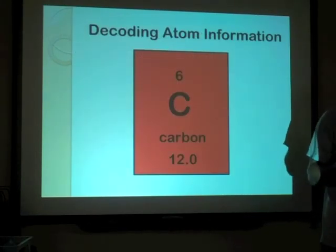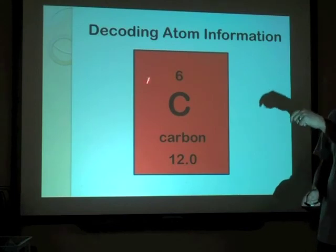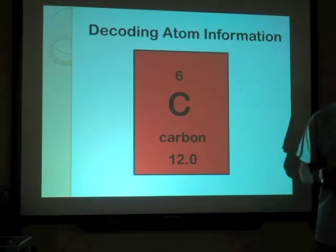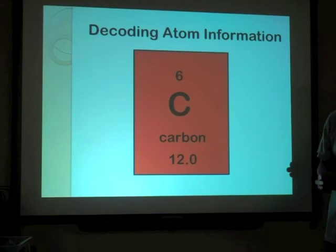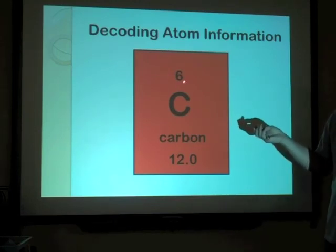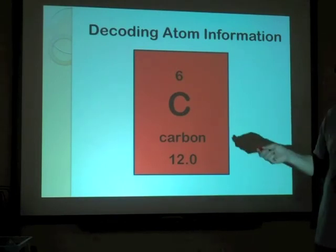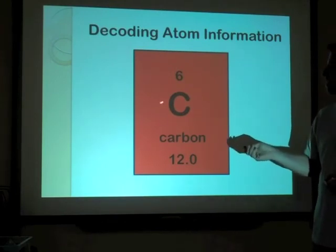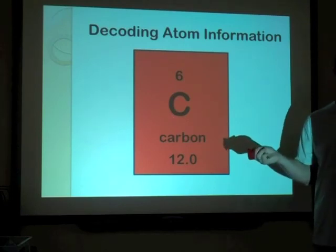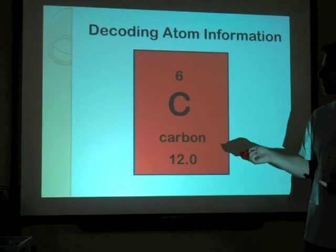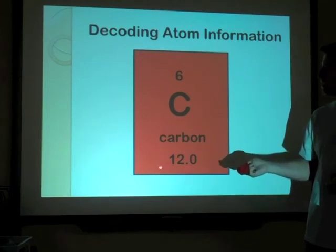Decoding atoms information: this is the kind of box you'll see on the periodic table. This one represents carbon. The six is the atomic number — so if I say find atomic number six on your periodic table, I'm referring to carbon. The C is the chemical symbol we use in chemical equations. Carbon is just the name. And 12 is the atomic mass.